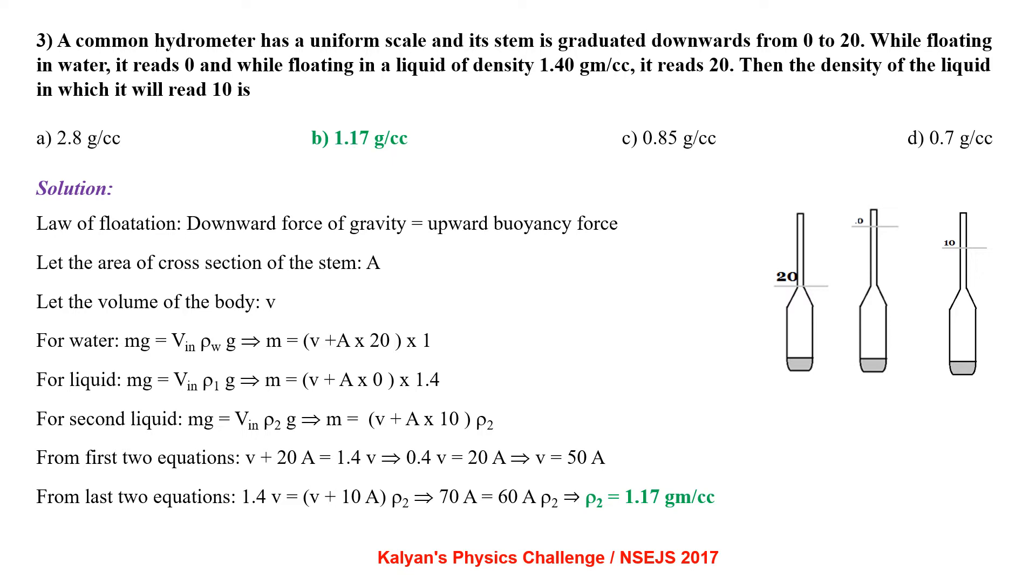From the first two equations, we get V equal to 50A. From the last two equations, we get rho 2 equal to 1.17 g per cc.